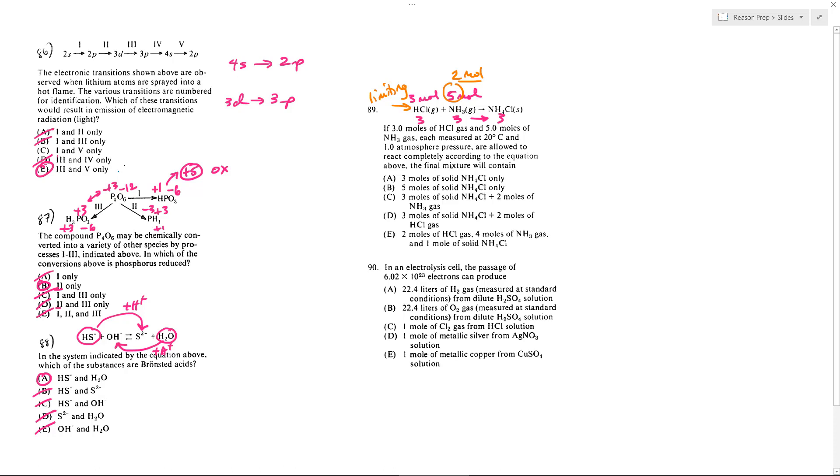So what will the final mixture contain? Well, it's sort of B and E, but we also know it contains 2 moles of NH3. So that gets rid of A and we can get rid of D because we've got leftover of the NH3, not leftover HCl. So we would get C for 89.